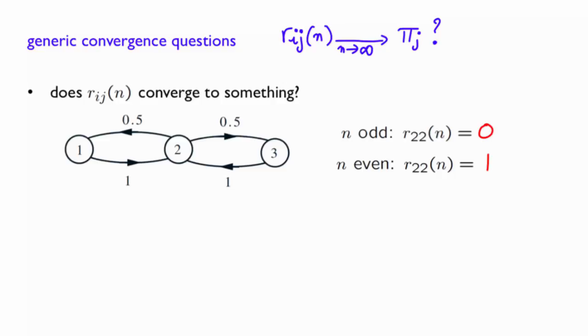Consider now the second question dealing with the vanishing importance of initial states when convergence occurs. For this, consider the following Markov chain.